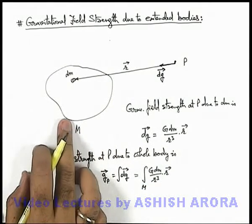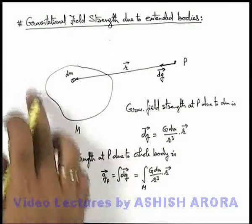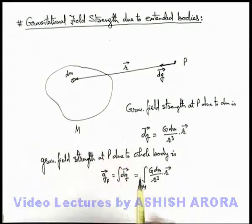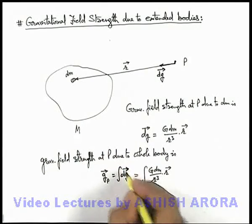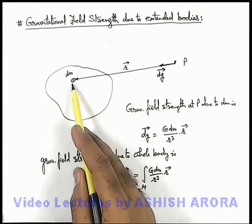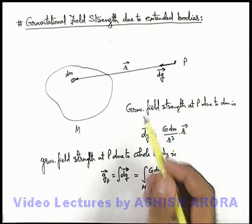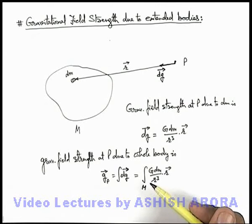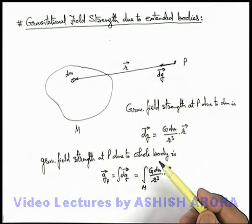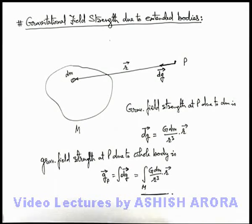But if the body is symmetric or the dimensions of the body are given, in that case we don't directly go for the vector integration. We can resolve this elemental gravitational field strength due to dm in different directions like the x or y axis and integrate it separately. From the next section we are going to take up various applications of calculation of gravitational field strength, and with those it will also be clear how we can mathematically calculate it rather than by directly using this expression of vector integration.